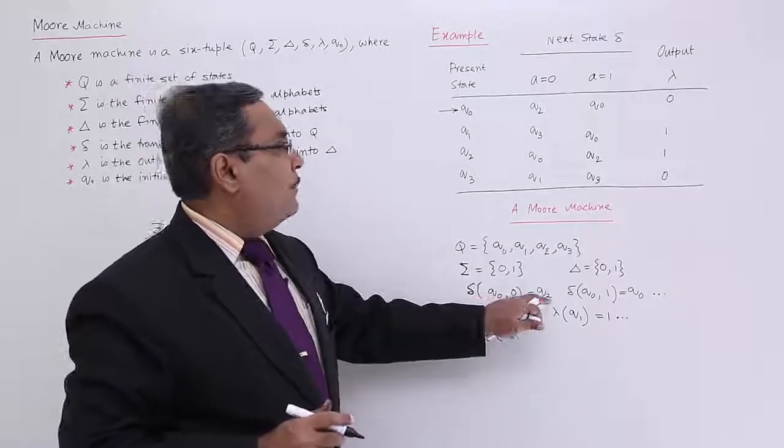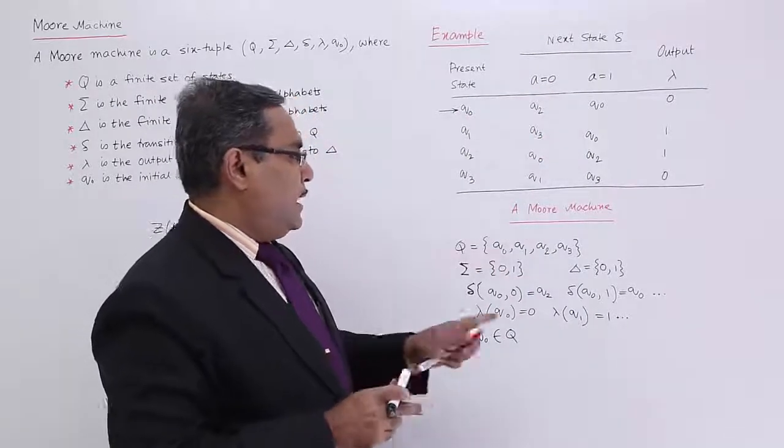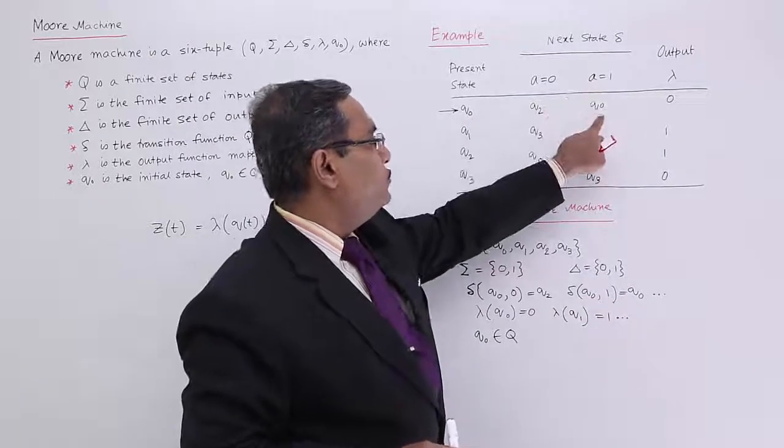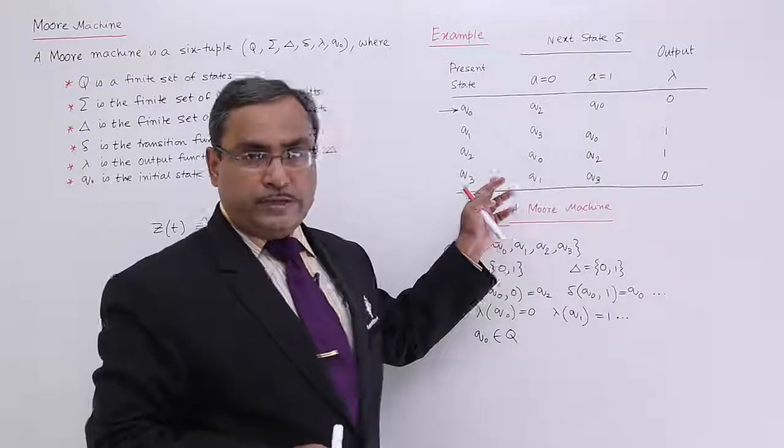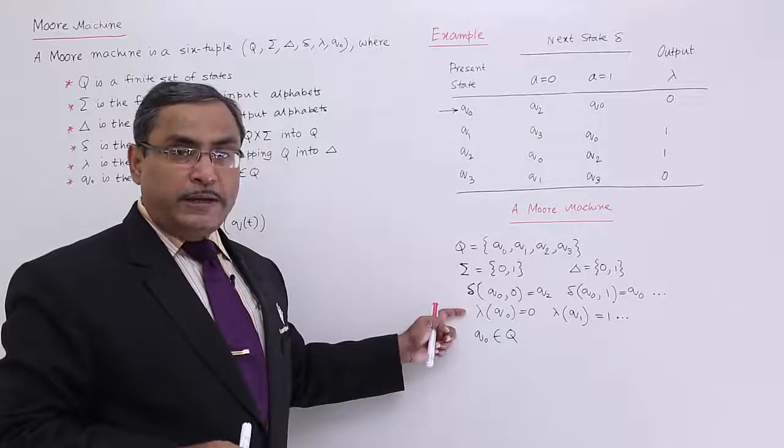Q0,0 will map into q2, and q0,1 will map into q0. In this way I could have declared for the rest 6 delta. That is the delta function and that is my lambda function.